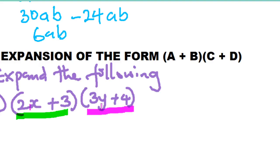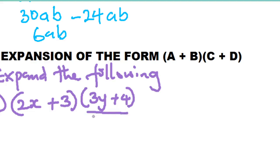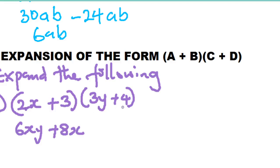The first term, 2x, will multiply everything in the second bracket. So 2x times 3y: 2 times 3 is 6, x times y is xy, giving 6xy. Then 2x times 4: plus times plus, 2 times 4 is 8, bring down x, giving plus 8x.